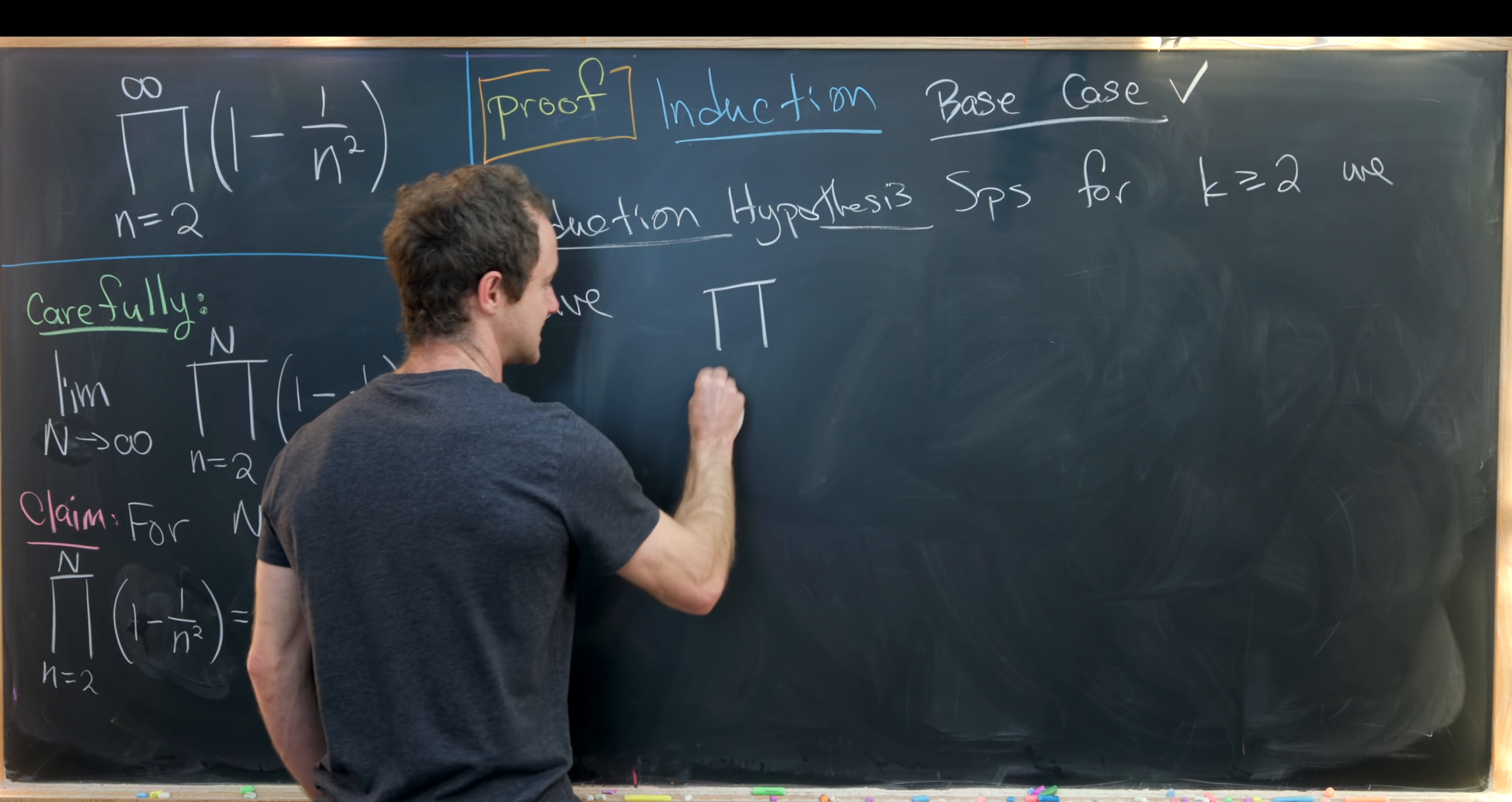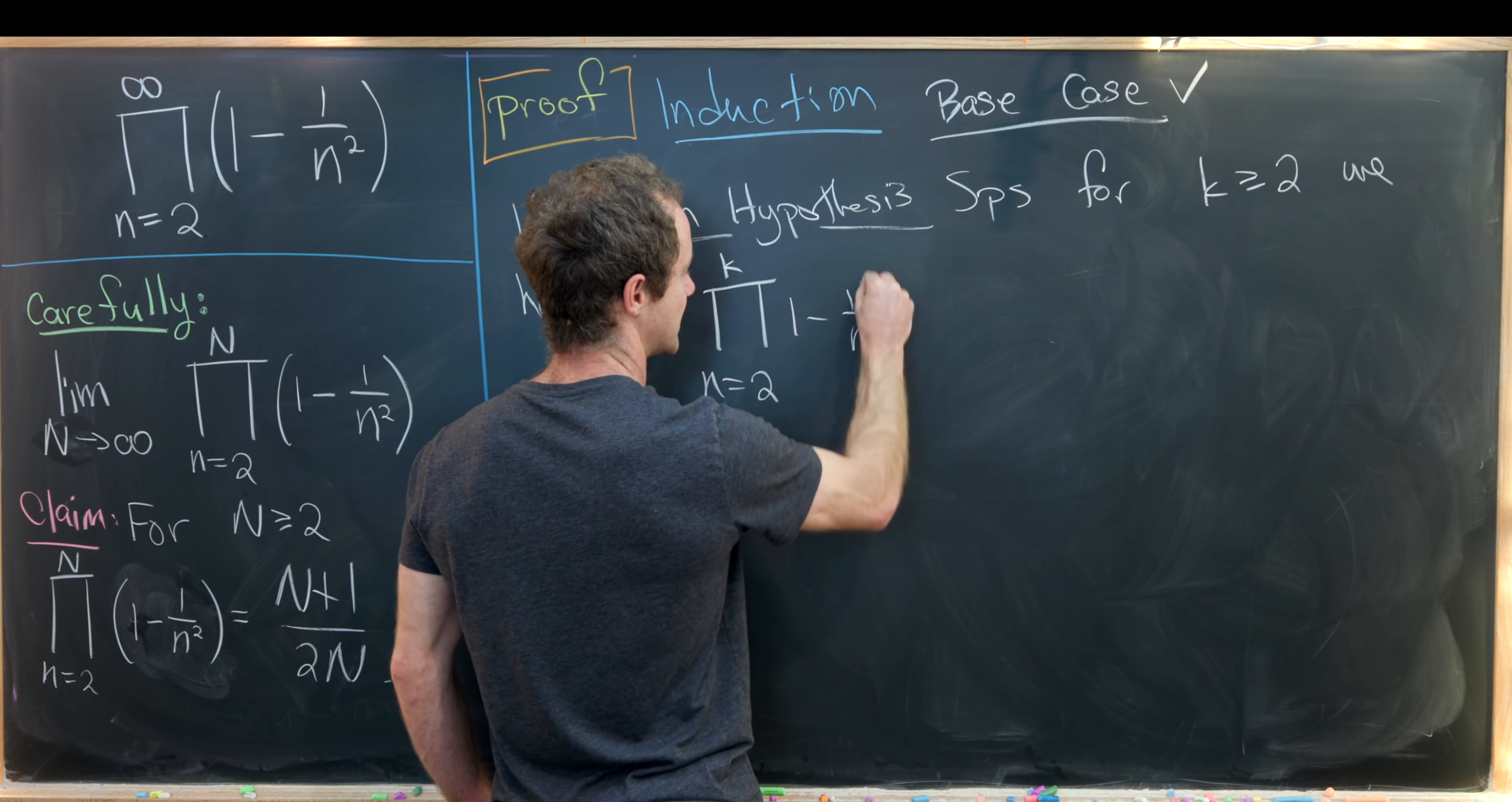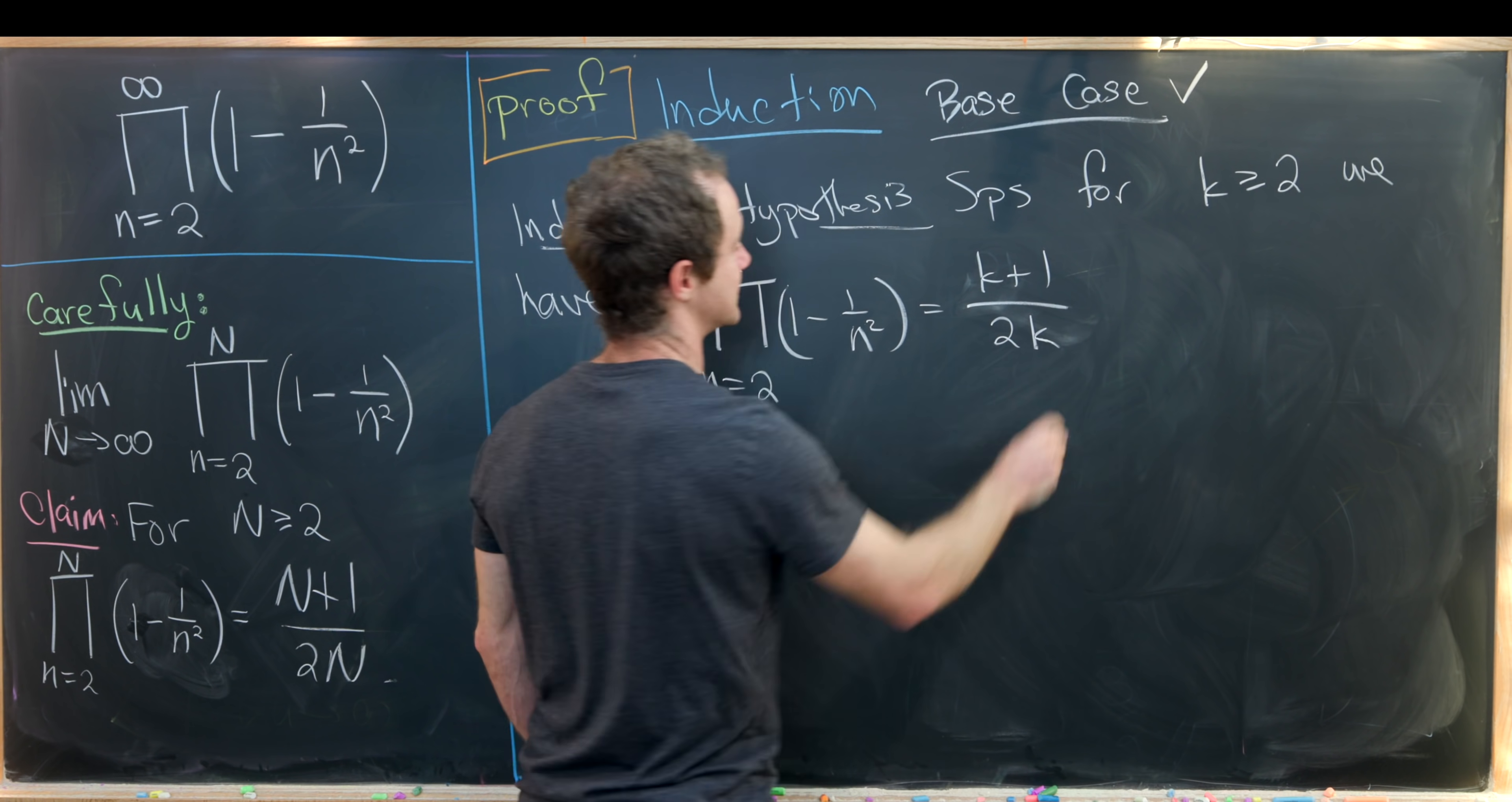we have the kth case is true. So in other words, the product as n goes from 2 up to k of 1 minus 1 over n squared is in fact k plus 1 over 2 times k.